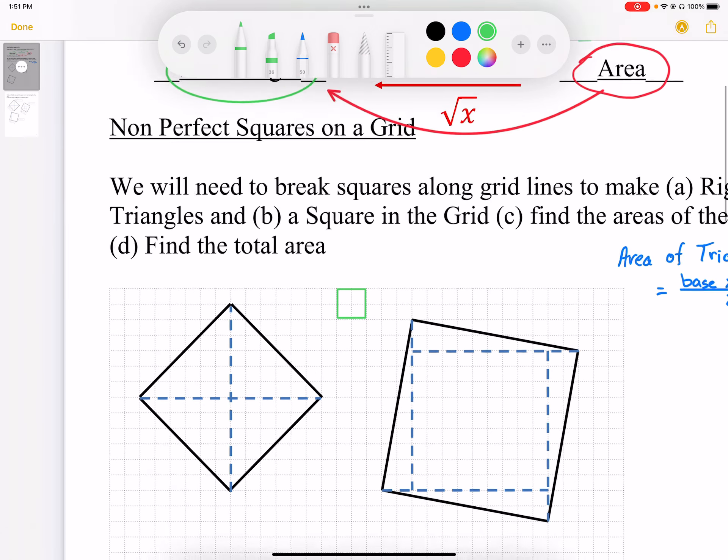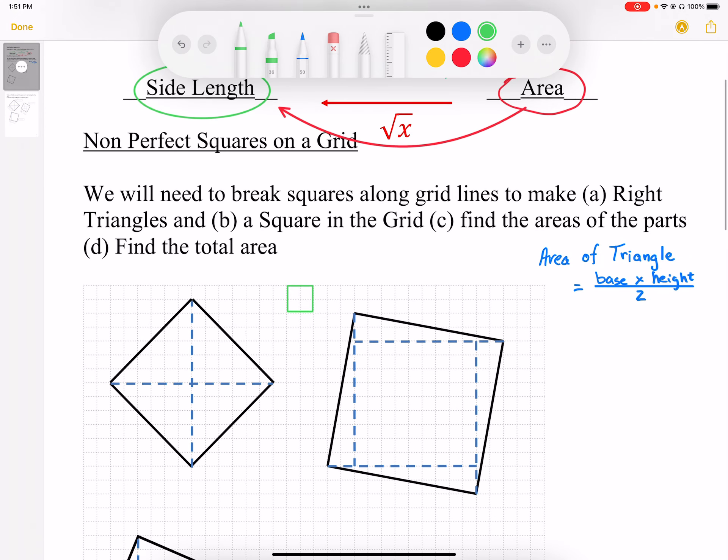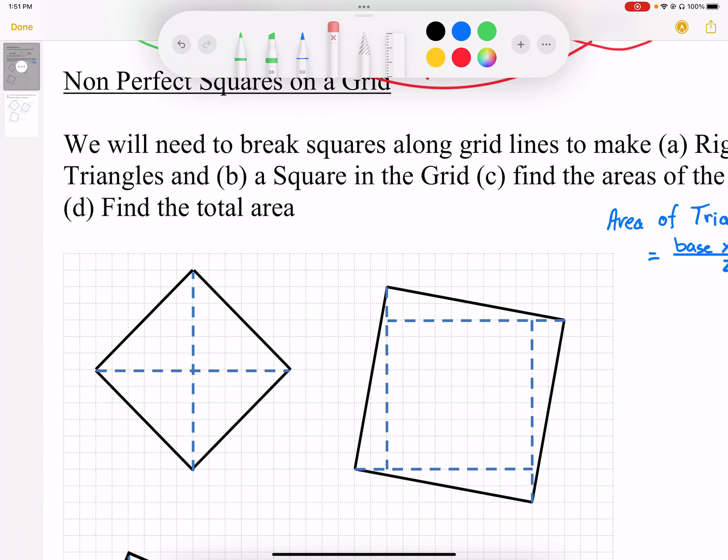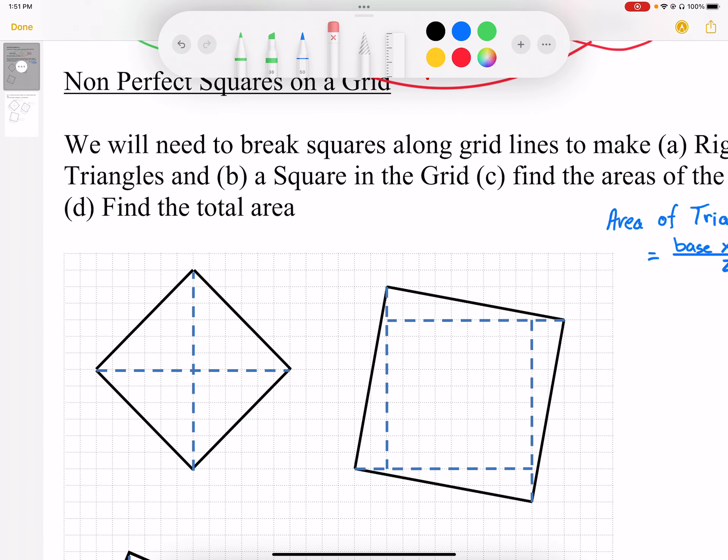But we can make non-perfect squares by drawing them at an angle. What we're going to do first is just practice finding out the areas of these non-perfect squares. The way I've drawn them, these are actually squares. If you take a look at them, they do look like squares.